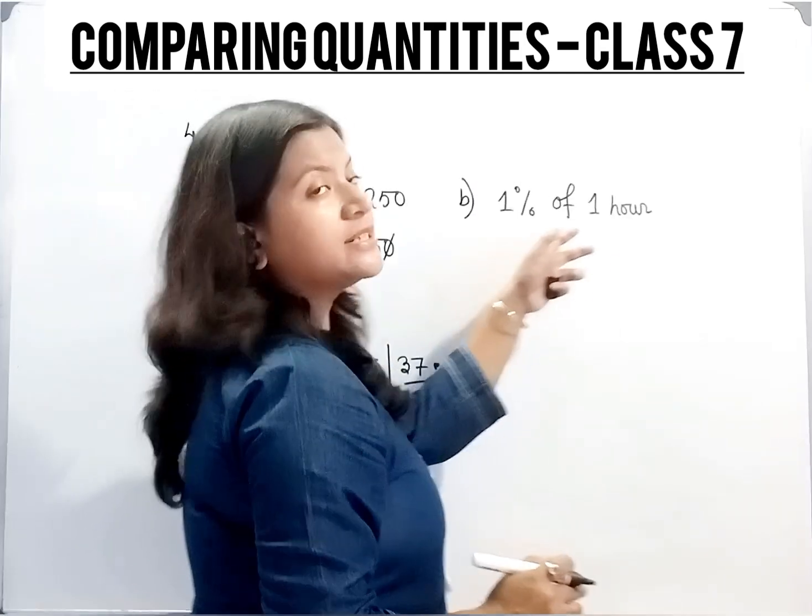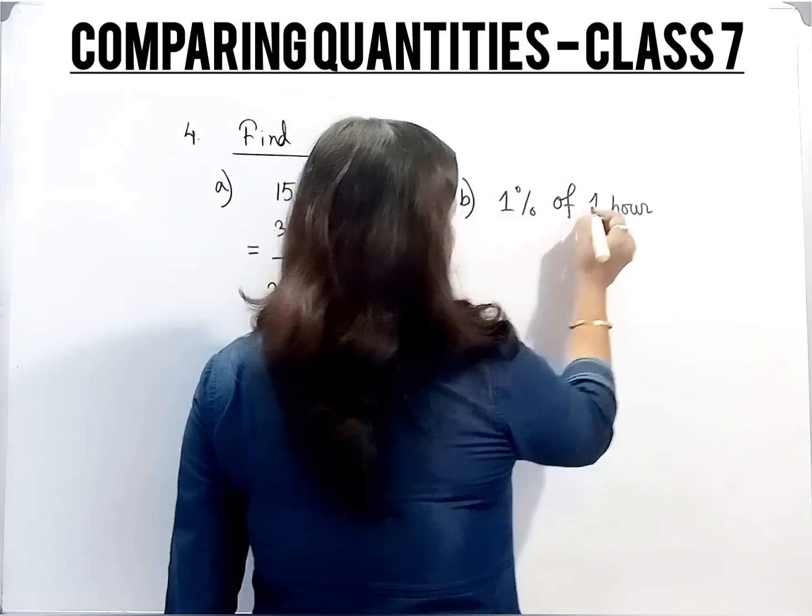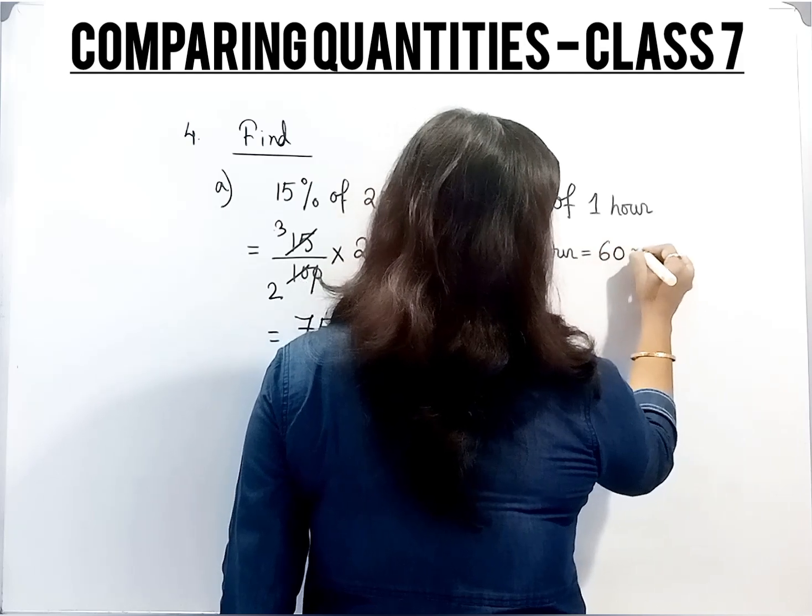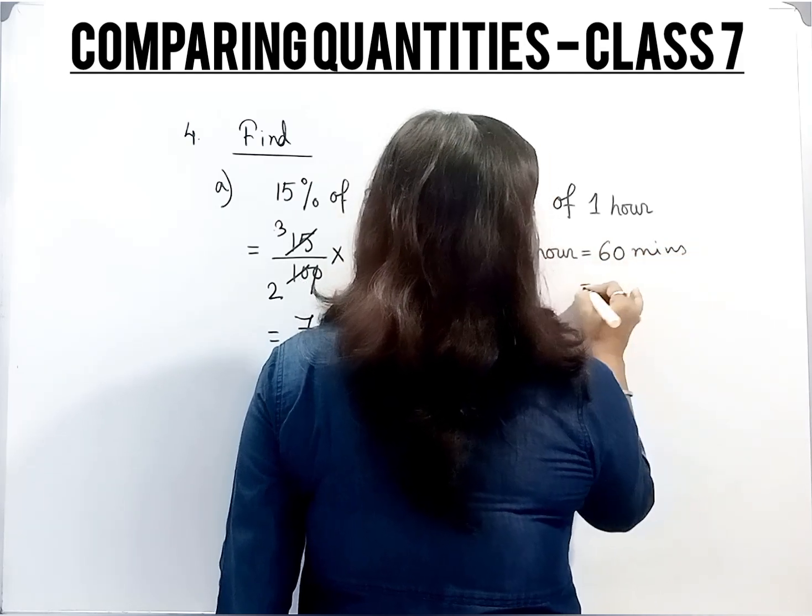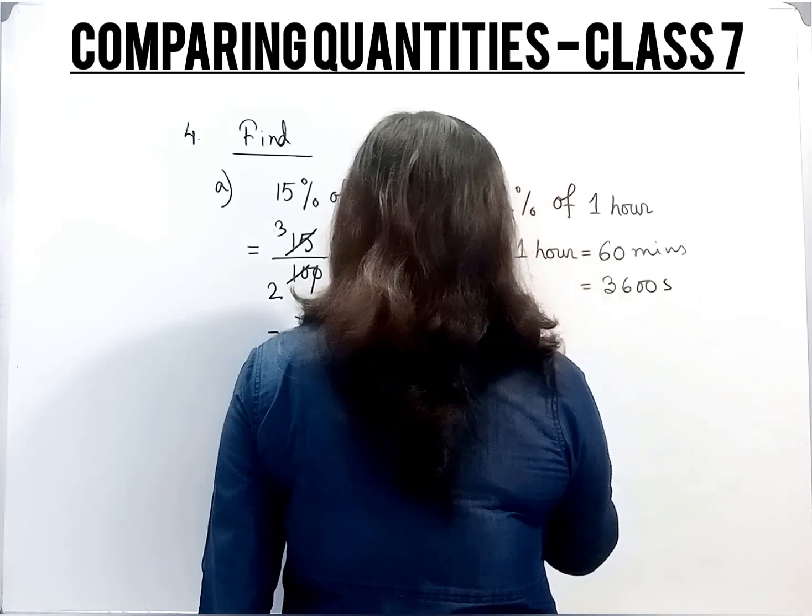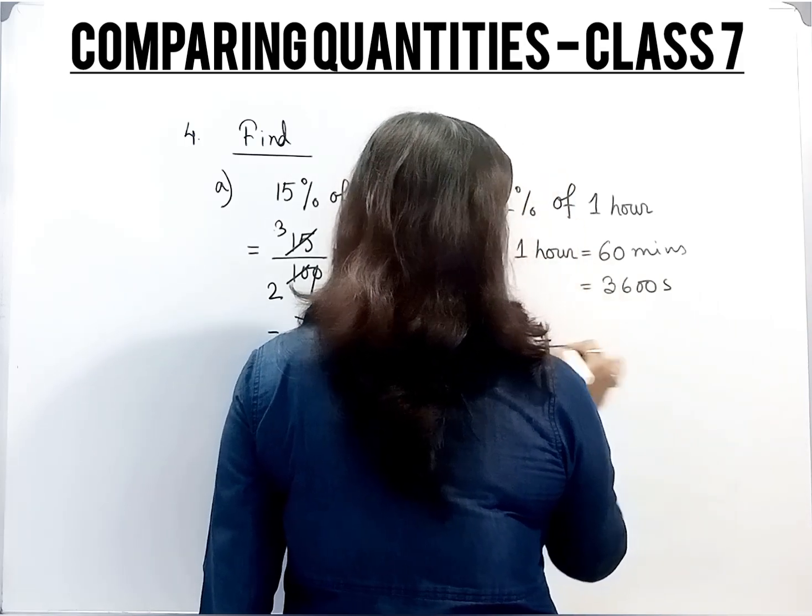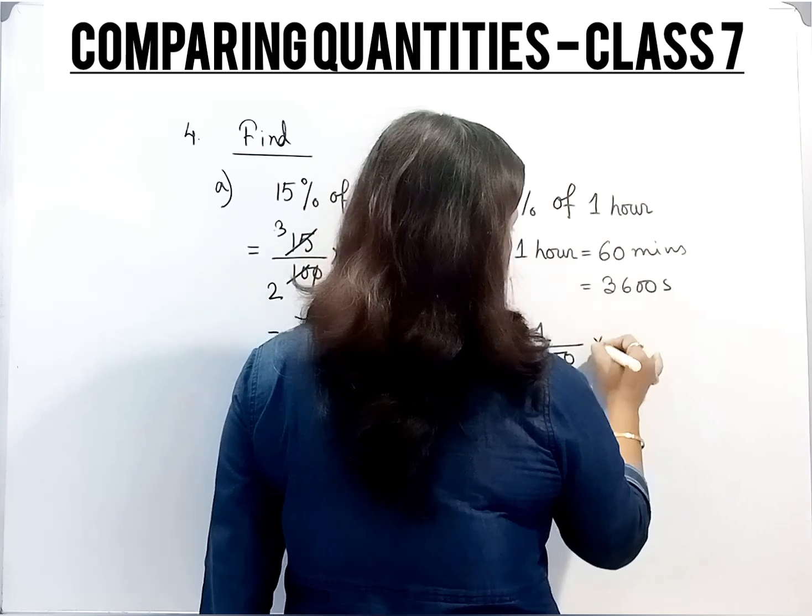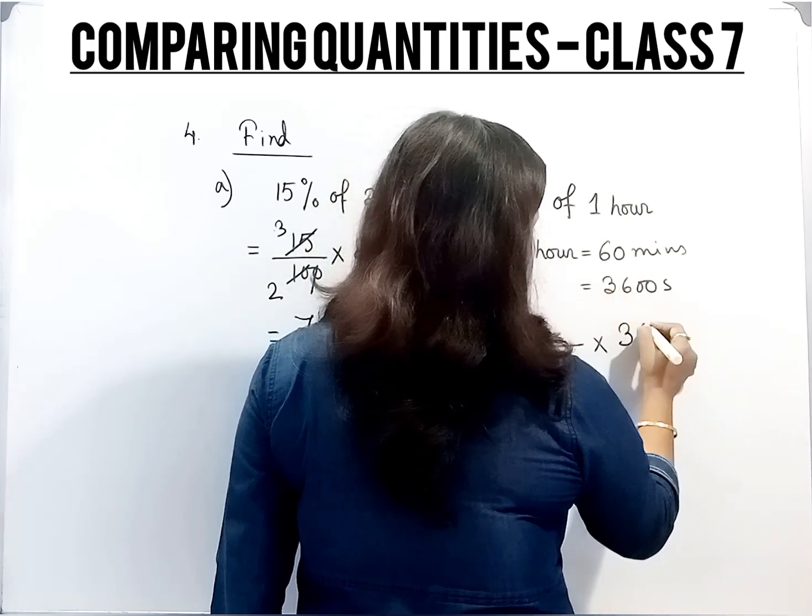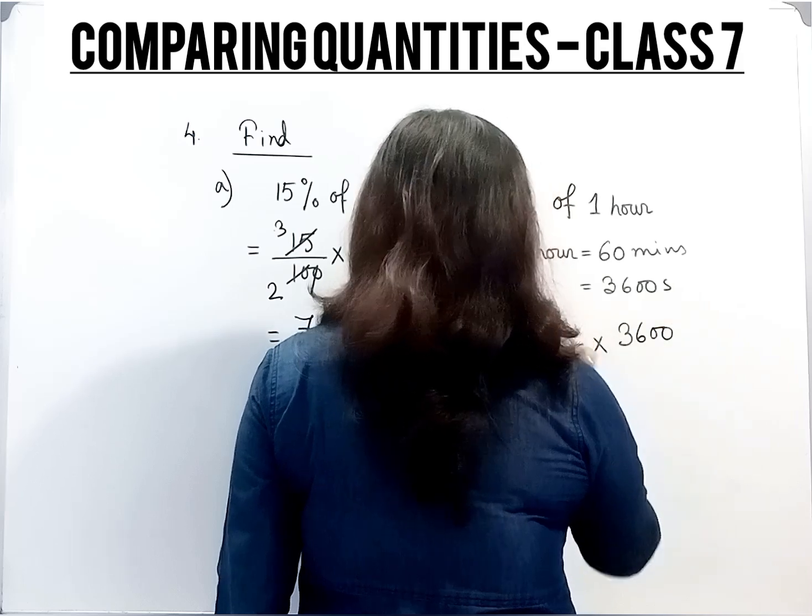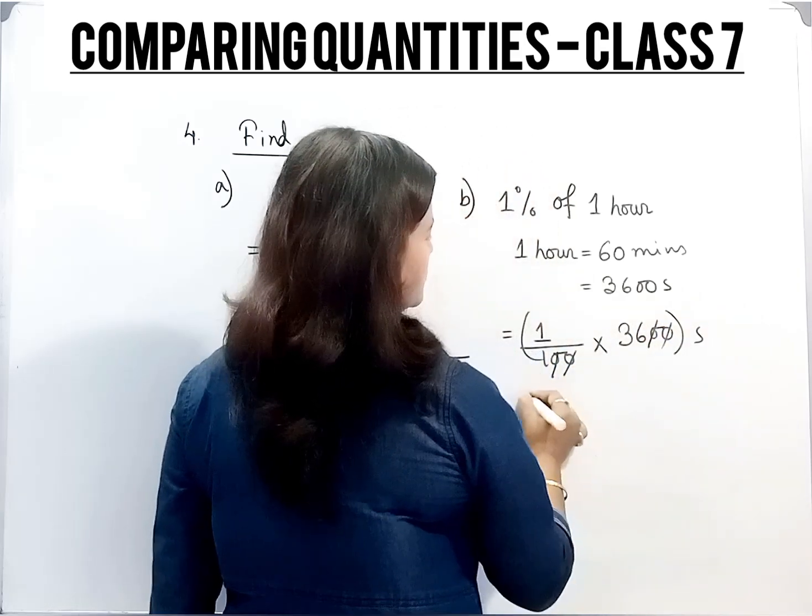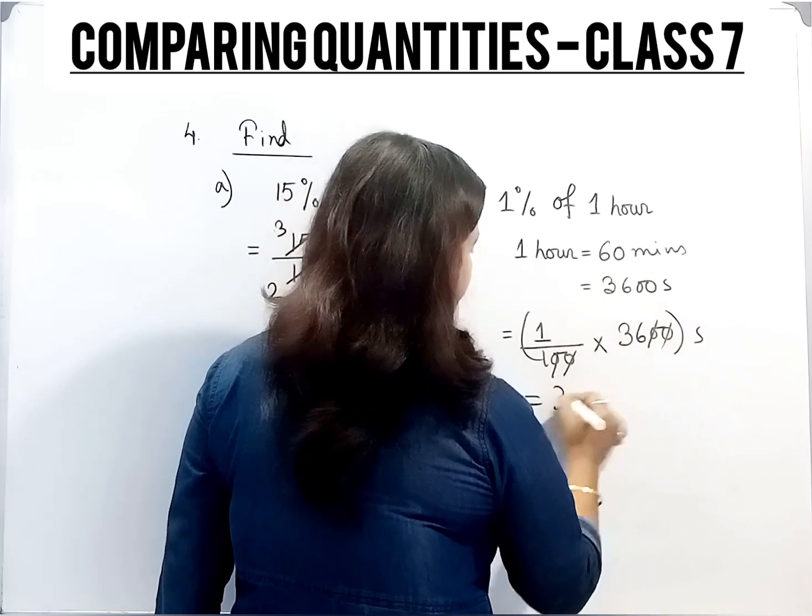Now 1 percent of 1 hour. 1 hour equals, we know that, 60 minutes, equals 3,600 seconds. Now 1 percent, that means 1 by 100 of, multiplication, into 3,600, and unit will be seconds. The zeros will get cancelled. 1 into 36, 36 seconds.